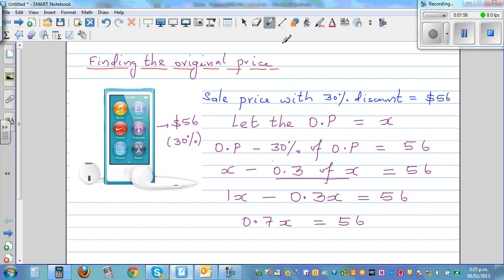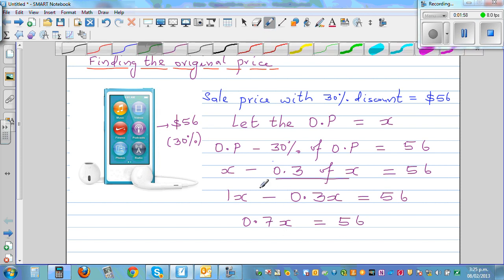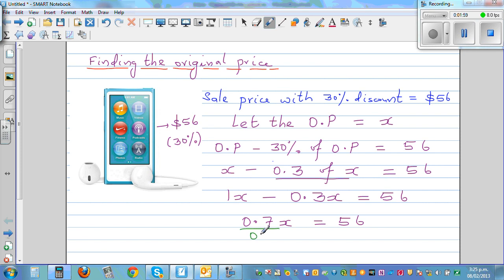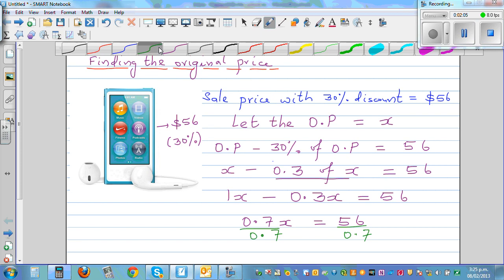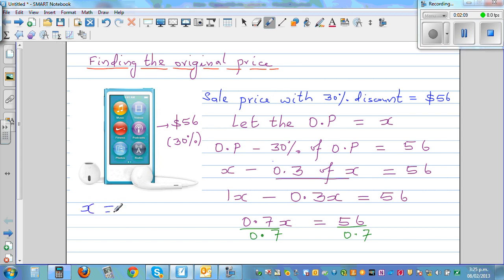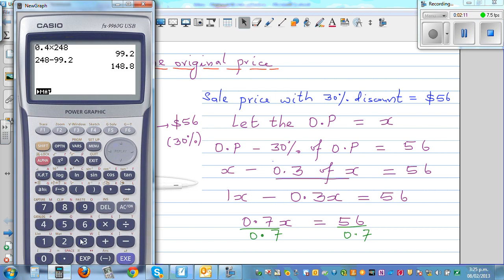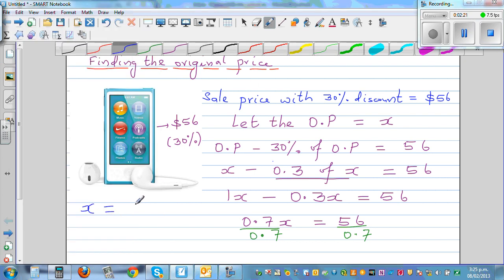So now I want to cancel this 0.7. So I'm going to divide this side by 0.7, so you have to divide this side by 0.7. So that is X is equal to, I'll write it here, 56 divided by 0.7, which is 80. The price was $80.